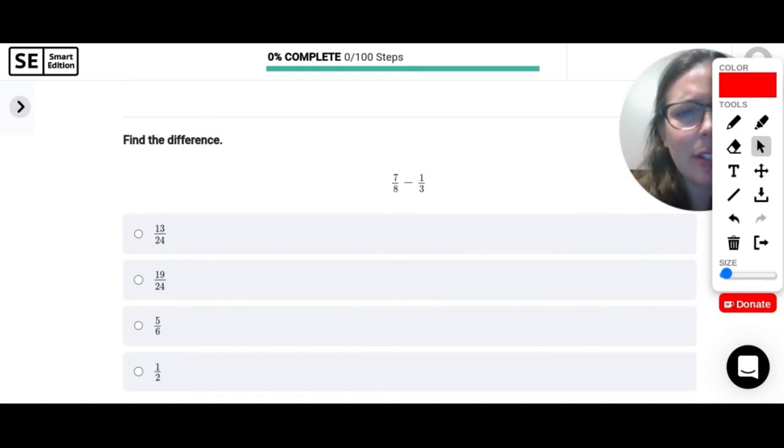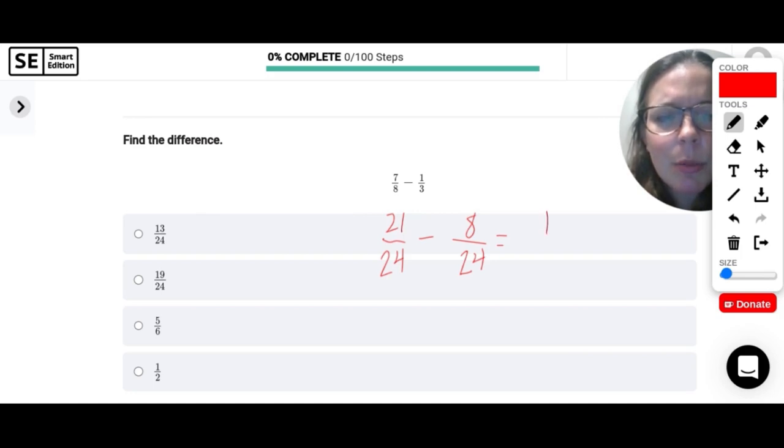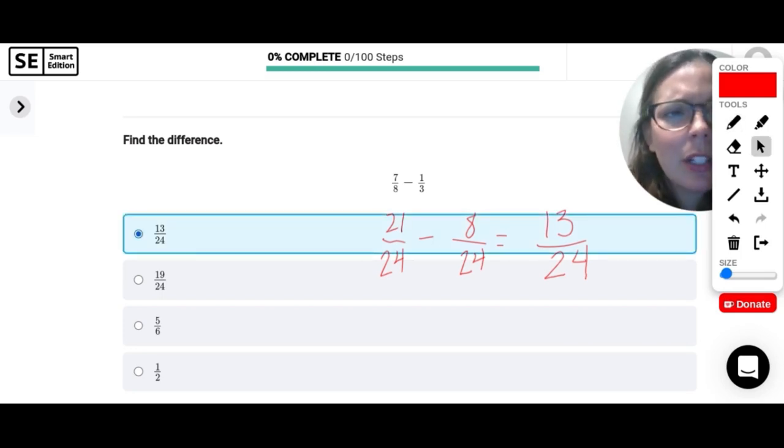Let's subtract some fractions here. 7 eighths minus one-third. Again, we need a common denominator. So common denominator for 8 and 3. 24 should work. So 8 times 3 gets me to 24. So 7 times 3 is 21. 3 times 8 is 24. 1 times 8 is just 8. So subtract these, and we get 13 over 24. So easiest way to find a common denominator is often just to multiply the denominators. And you're good to go.